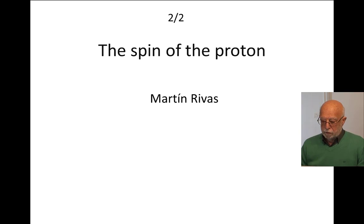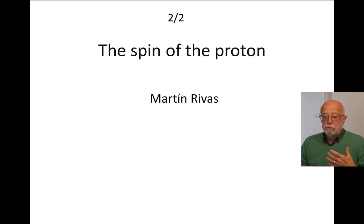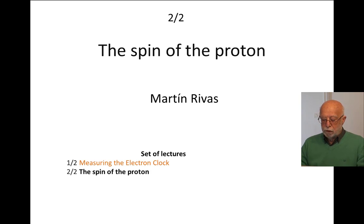This is the second lecture of a classical explanation of two features. The first one was devoted to the analysis of the internal frequency of the electron, the frequency of the motion of the center of charge of the electron around the center of mass. The second lecture is devoted to the analysis of the spin of the proton. The proton is a bound system of three quarks, and experimentally people claim that the addition of the spins of the quarks does not give rise to the spin of the proton. We are going to see where we believe there is a problem with the addition of the quark spins to obtain the spin of the proton.